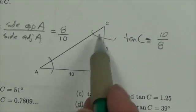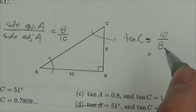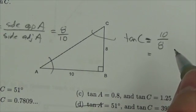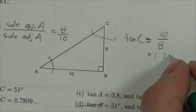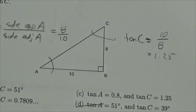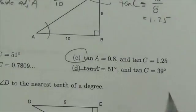10 over 8, let me convert that to a decimal here. 10 divided by 8 is going to be 1.25. So it turns out the answer we can see right now on the screen is C.